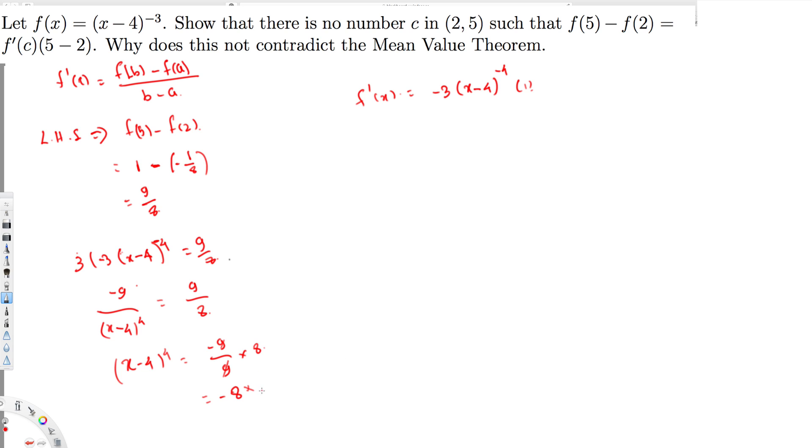Therefore, they're asking why does this not contradict the Mean Value Theorem? If it's not getting a value, it means there's something wrong—we need to check whether it is satisfying the two conditions of the Mean Value Theorem. First, it must be continuous, and second, it must be differentiable.